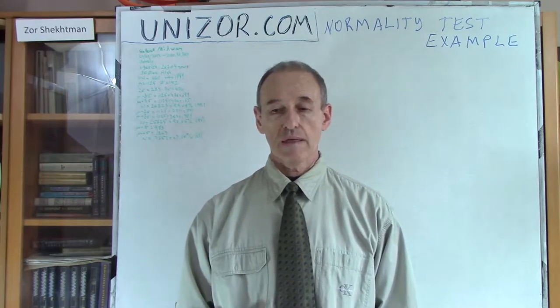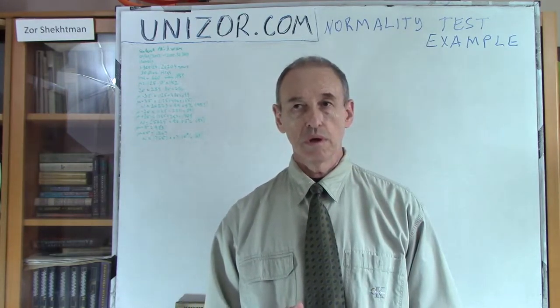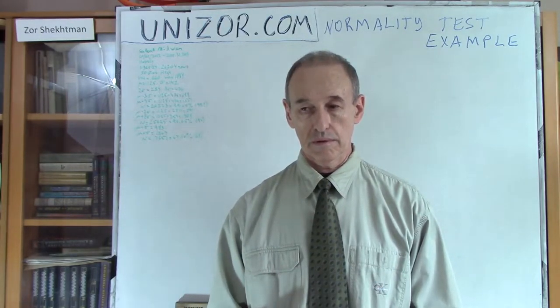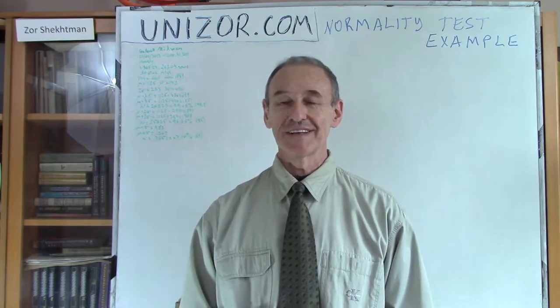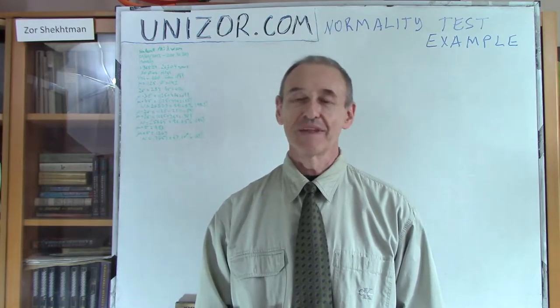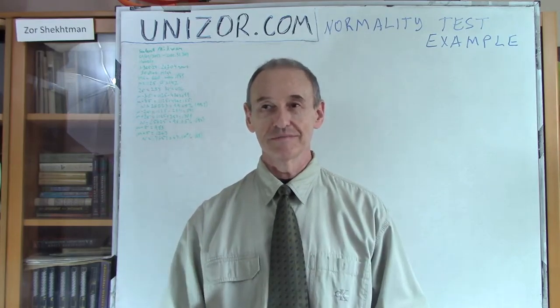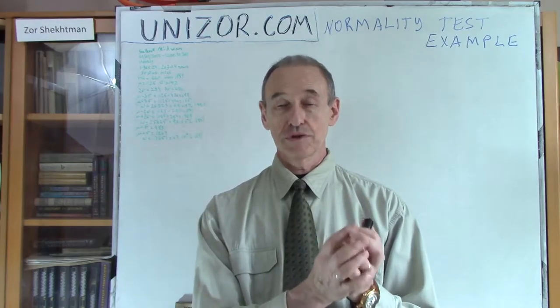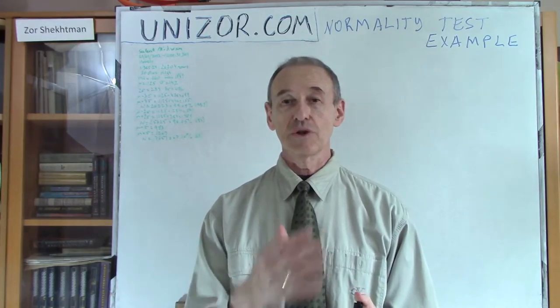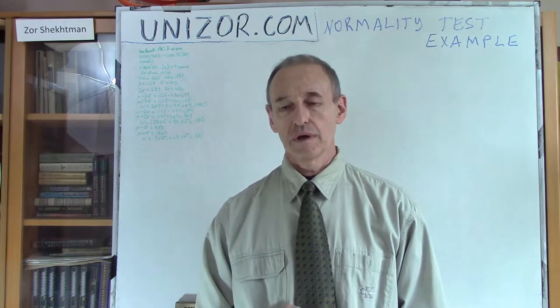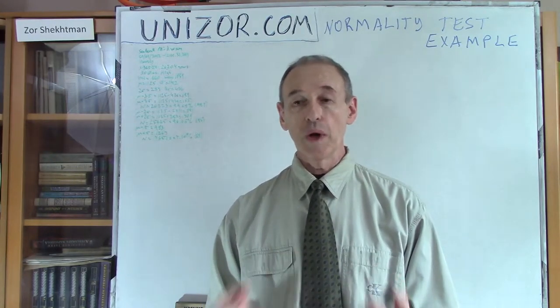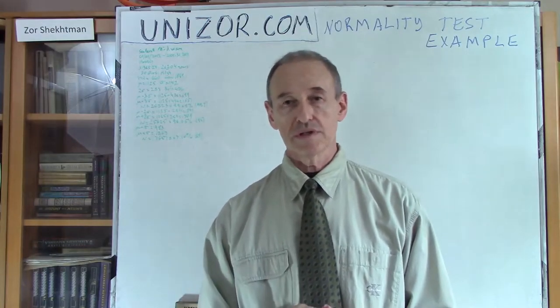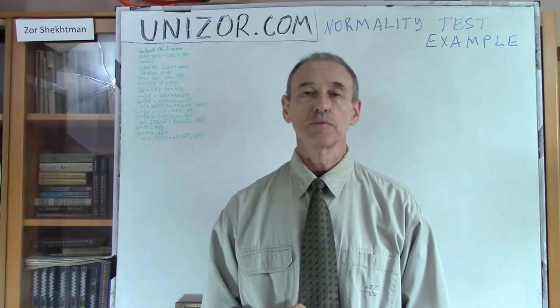There are only two parameters we need to define the normal distribution, which is mathematical expectation or mean and variance or square root of variance which is standard deviation. These two parameters are sufficient to completely define all the probabilities related to random variables. What's also very important is that a lot of random variables which we deal with in real life are actually normal.